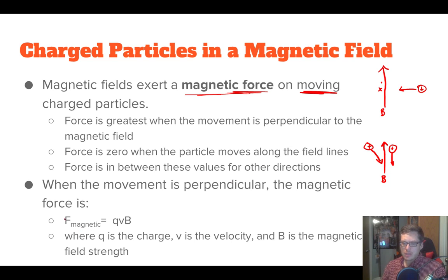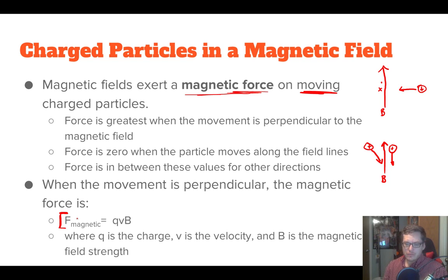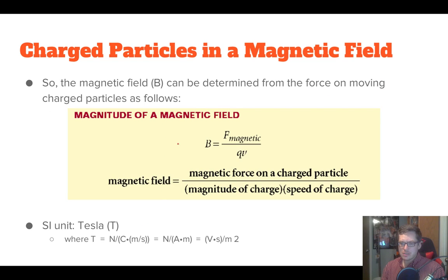We can use this formula to calculate the magnetic force when the velocity is completely perpendicular — this gives us the maximum magnetic force. The magnetic force is equal to Q (the charge) times the velocity of our moving particle, times the magnetic field strength: F = QVB. We can rearrange to find B: B equals F-magnetic over Q times V — magnetic force over the magnitude of the charge times the speed. The SI unit for magnetic field is the Tesla, capital T.